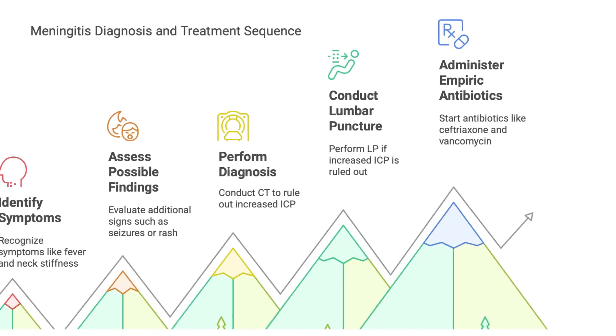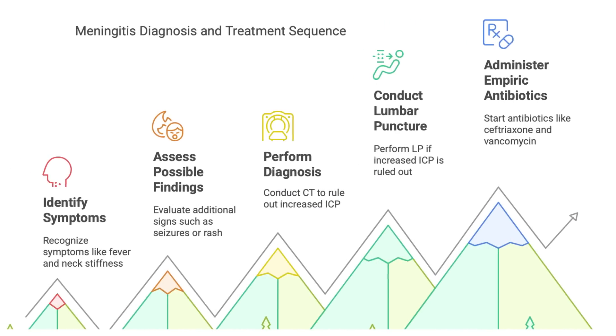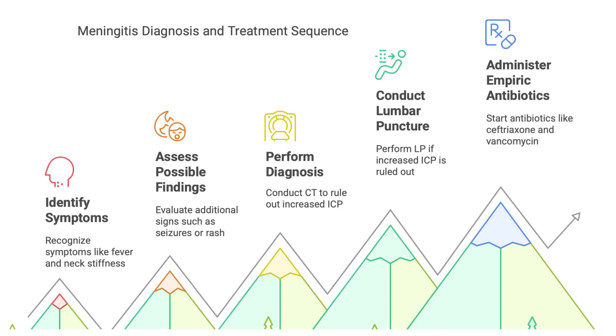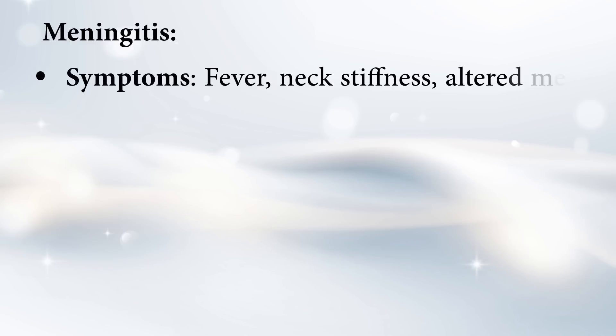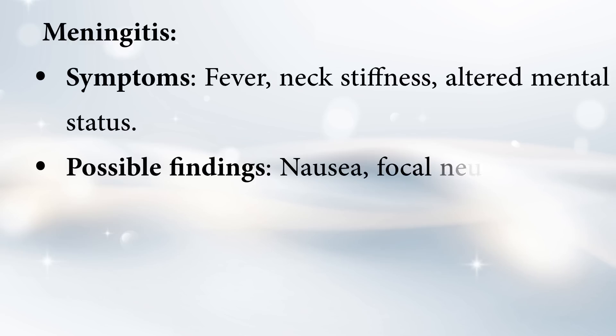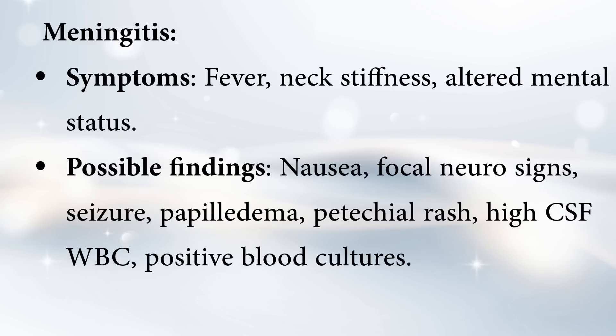The guide talks about headaches from meningitis. Meningitis is inflammation of the membranes around your brain and spinal cord, usually caused by an infection. The main symptoms listed are fever, stiff neck, and altered mental status — things like being confused or disoriented.